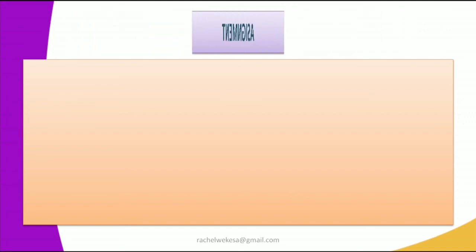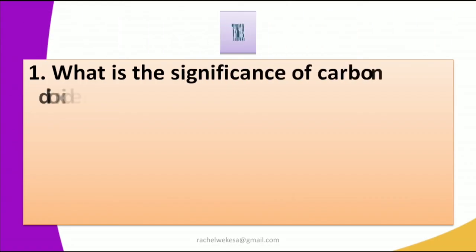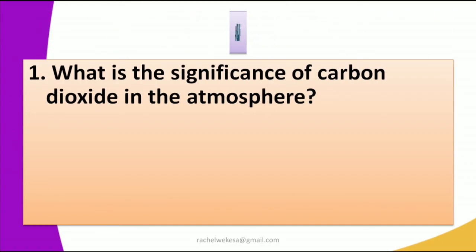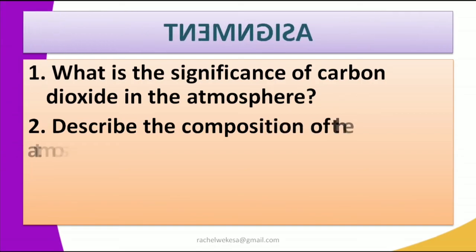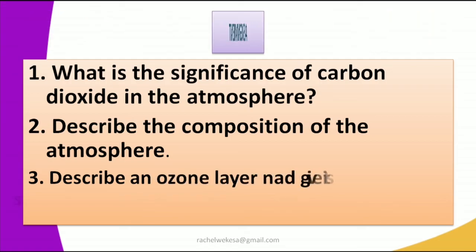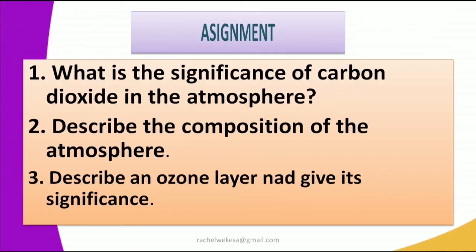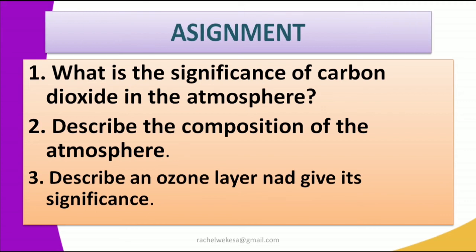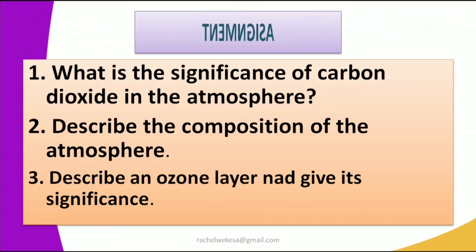We have come to the end of our lesson today, and here is your assignment. Number one: what is the significance of carbon dioxide in the atmosphere? Number two: describe the composition of the atmosphere. Number three: describe the ozone layer and give its significance. Those are the three questions from what I have taught you today. Thank you.